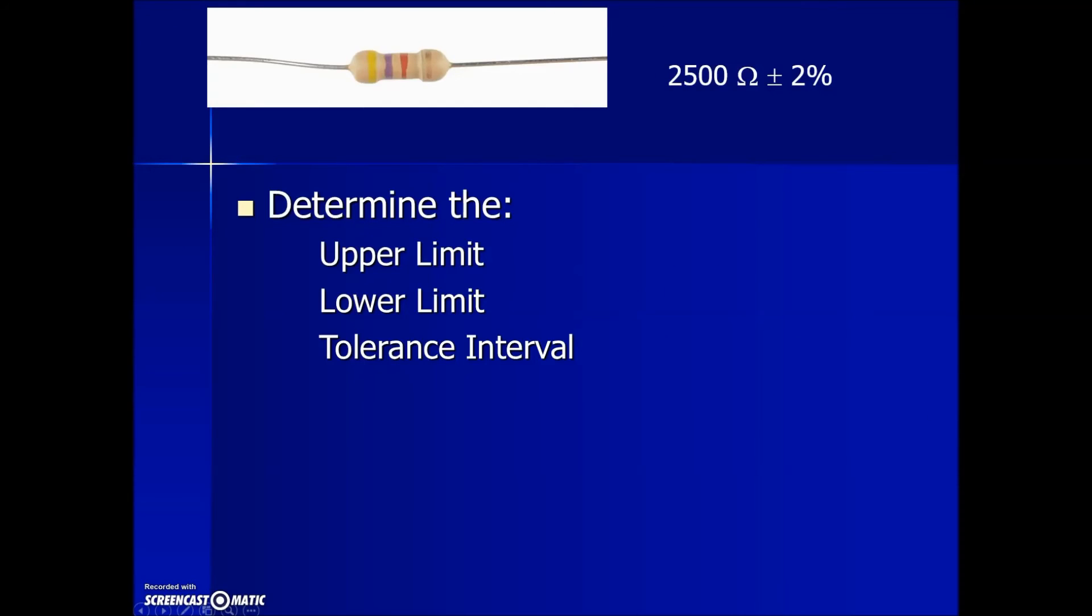Here's another example with a percentage given. We have a resistor that has a standard measurement of 2,500 ohms plus or minus 2 percent variation. The preliminary step here is to translate that percentage into a number that we can add and subtract. We need to determine what 2 percent of 2,500 is.